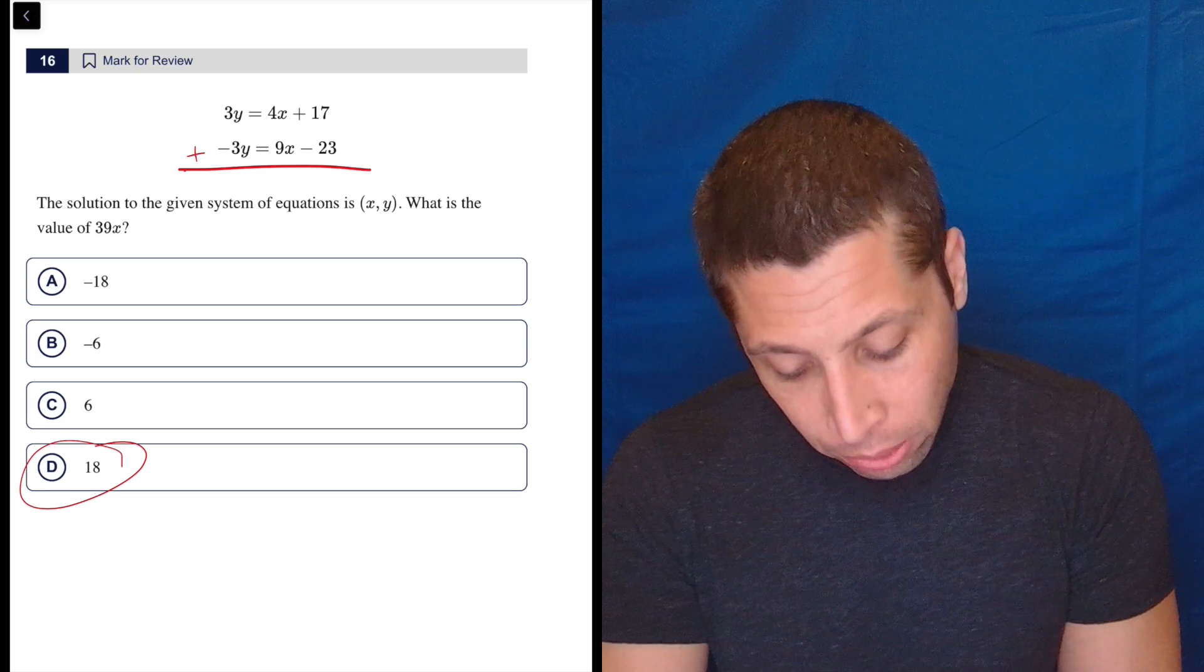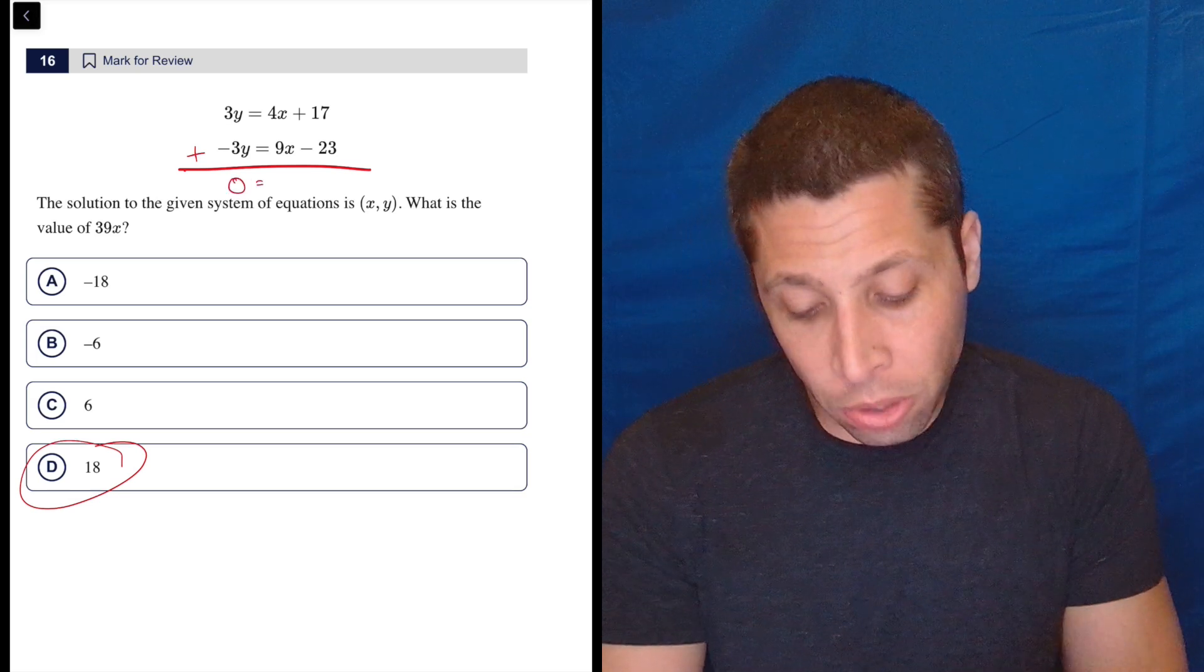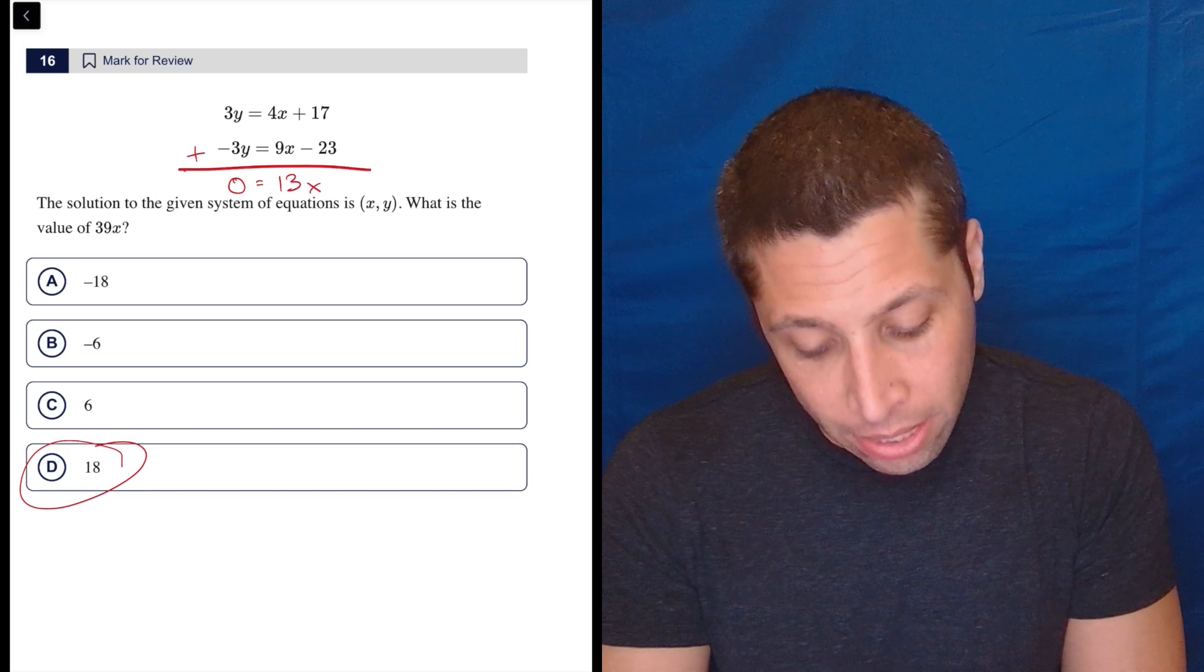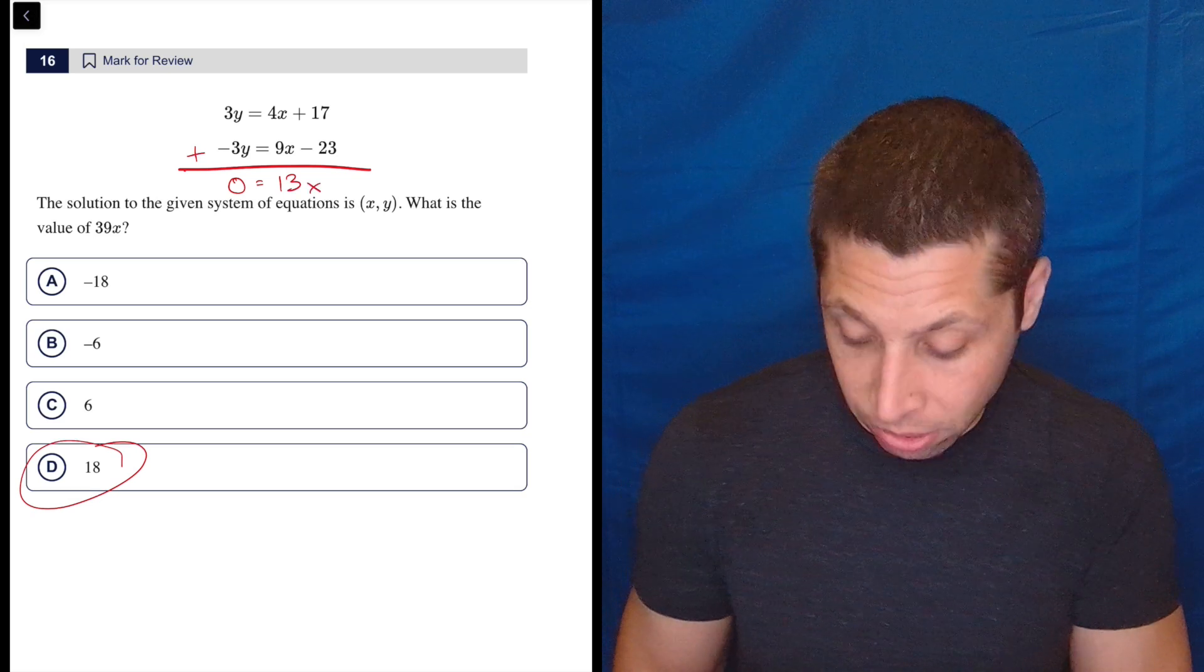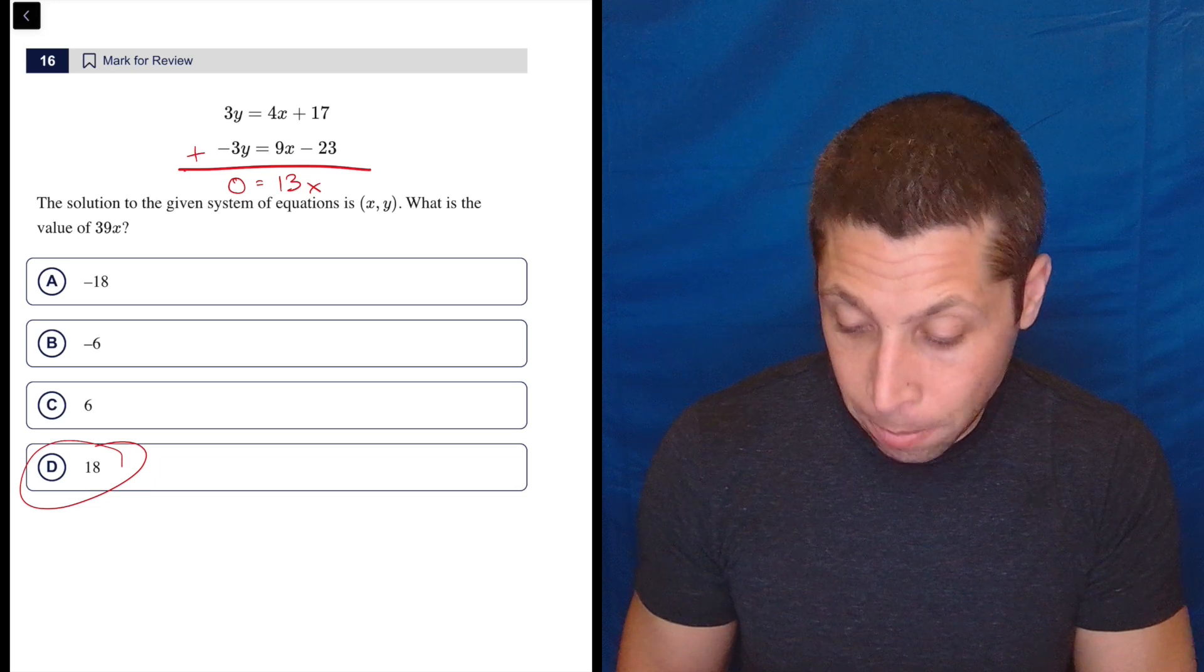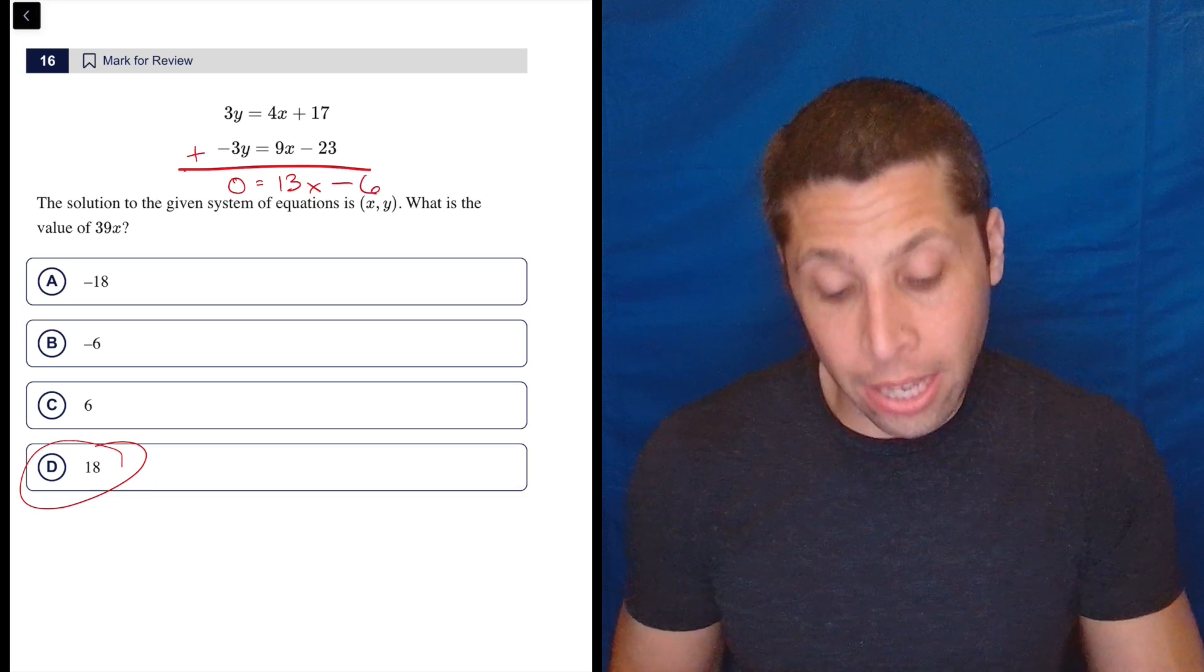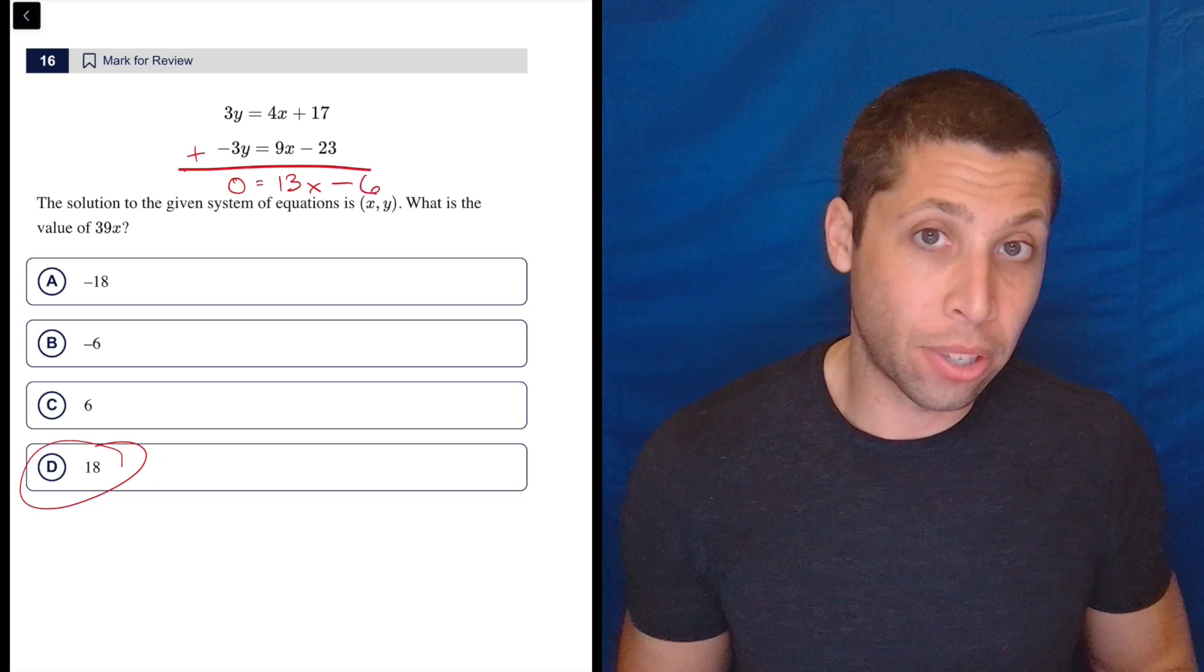So what we have here is zero is equal to just add them up. So 13x and then 17 minus 23. I'm a little nervous about messing that up, but I believe it's negative six. So 17 minus 23. And now we see where these other wrong answers came from.